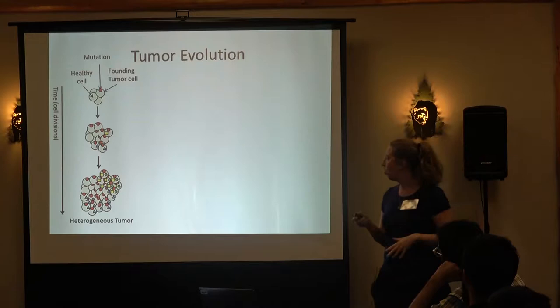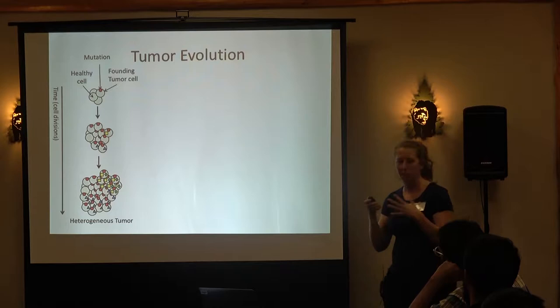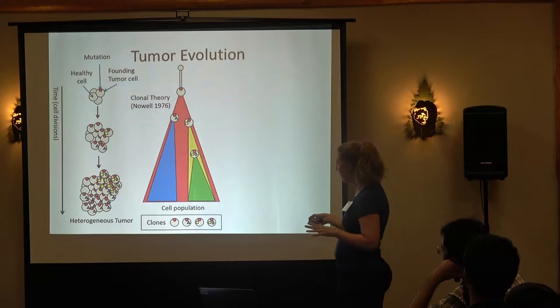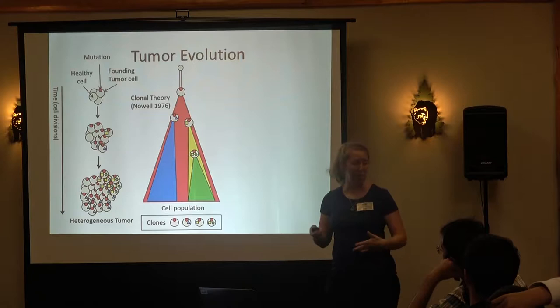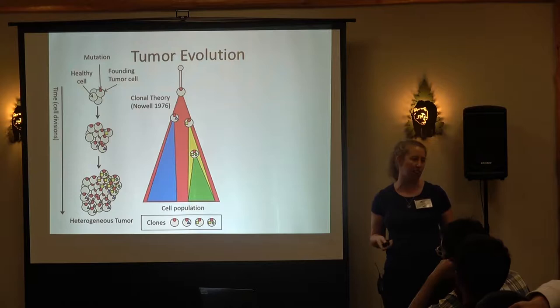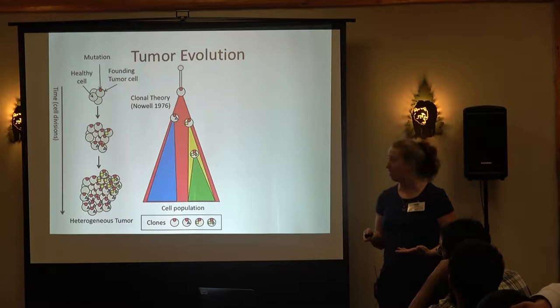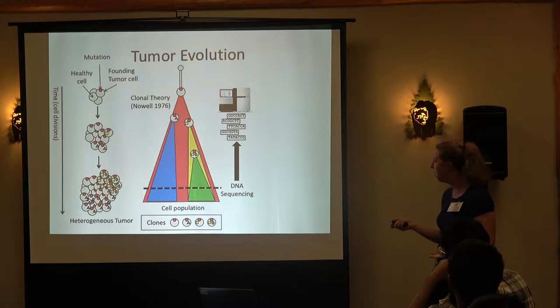This evolutionary process is referred to as the clonal theory of cancer, and we can think about describing the history of a tumor using a diagram. Cell populations are along the x-axis, the y-axis represents time in different cell divisions, and I use different colors to represent different clones — sets of cells that share the same sets of mutations. We don't actually observe this process; when a patient is diagnosed we sequence the tumor at a particular point in time, and from that DNA sequencing data we want to go back and infer this evolutionary history.